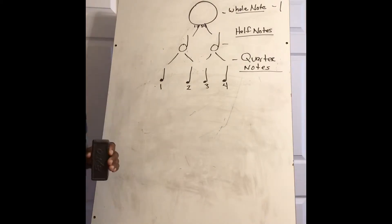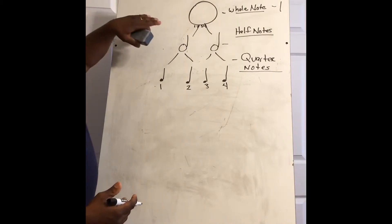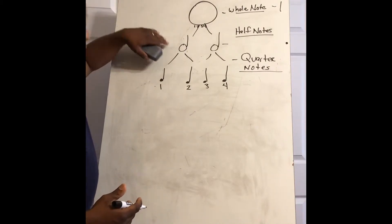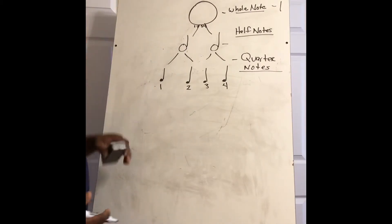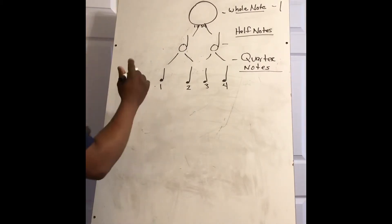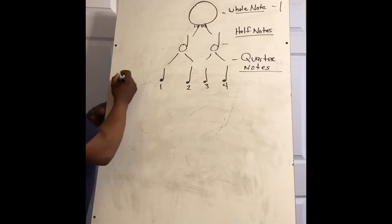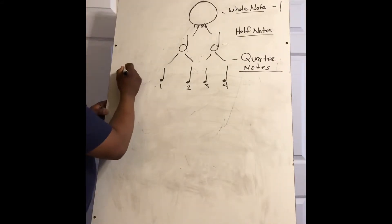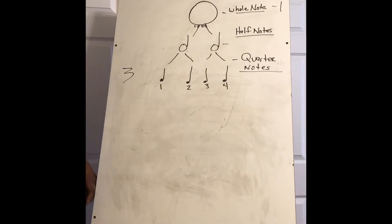For every note, there's a rest as well. So you have a whole rest, a half note rest, and a quarter rest. A quarter note rest is going to look like that — it'll look like a weird three, if I could say it like that.